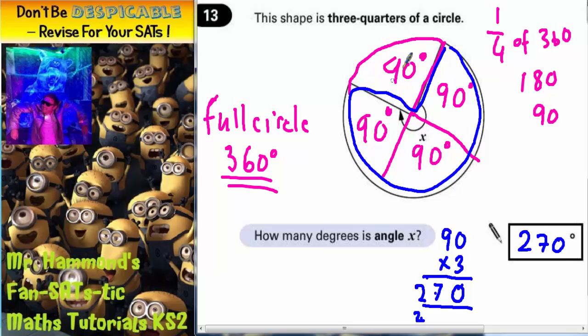Another way of thinking about it is in terms of right angles. If you split a circle into 4 right angles, each right angle is 90 degrees. So you're actually dealing with 3 right angles. Right angle there, a right angle there, and a right angle there. 3 lots of 90 is 270 degrees.